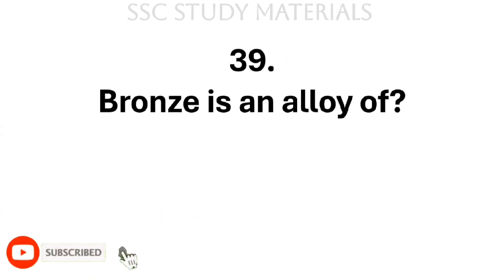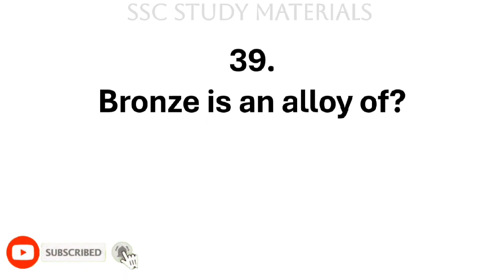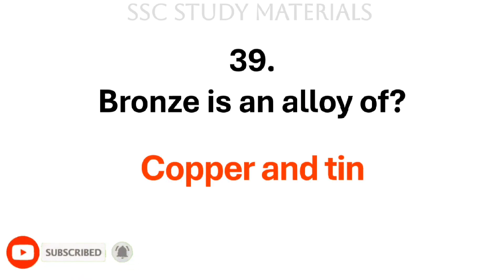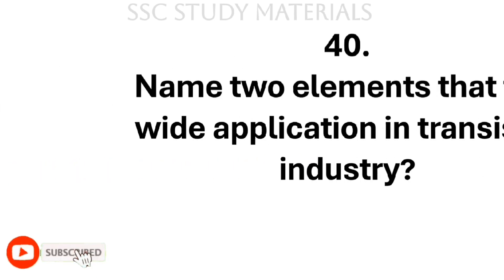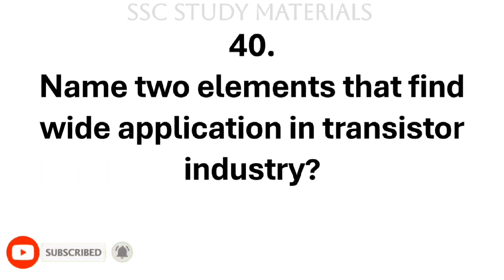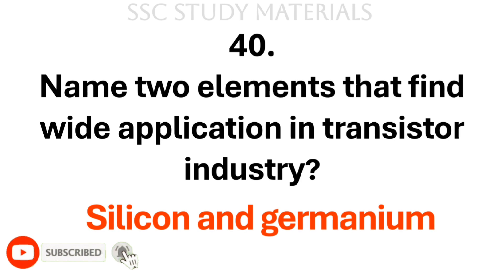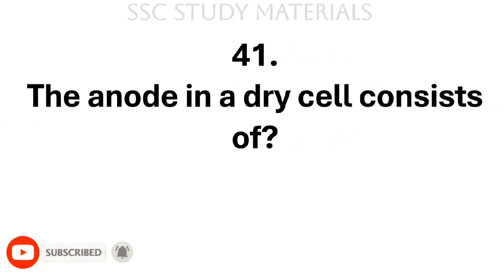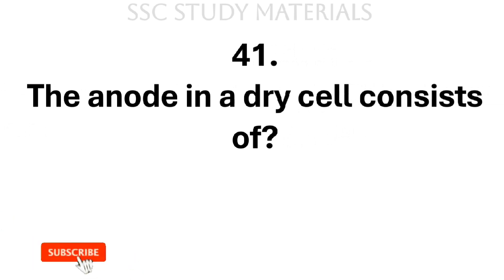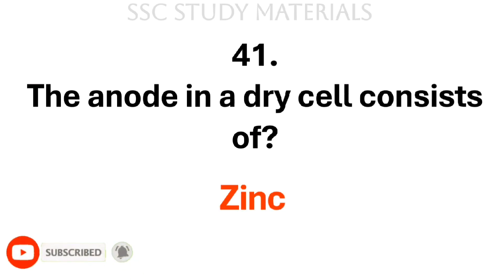Question No. 39: Bronze is an alloy of? Answer: Copper and tin. Question No. 40: Name two elements that find wide application in the transistor industry. Answer: Silicon and germanium. Question No. 41: The anode in a dry cell consists of? Answer: It consists of zinc.